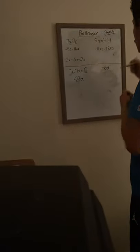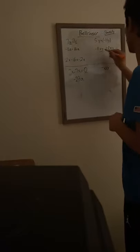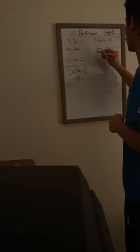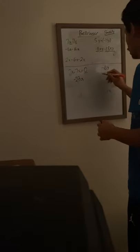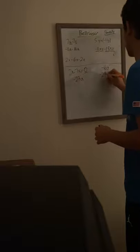Now we're going to do negative 11xy minus 18xy. Since we do have like terms, we're going to combine these — negative 11 minus 18 — which gives you negative 29. We keep our like terms, which is xy, so we have negative 29xy.